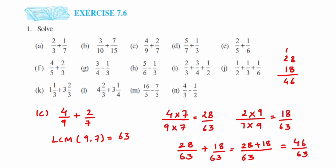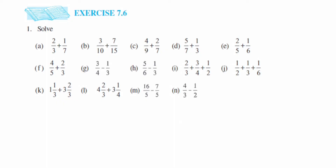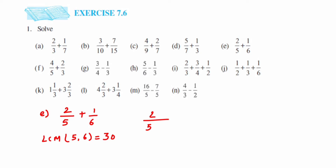Moving on, problem E: the number is 2 upon 5 plus 1 upon 6. Again the denominators are different, so we take the LCM of 5 and 6, which is 30. For the first number 2 upon 5, we multiply by 6 to get 30 in the denominator, giving 12 upon 30. For 1 upon 6, we multiply by 5 to get 30, giving 5 by 30.